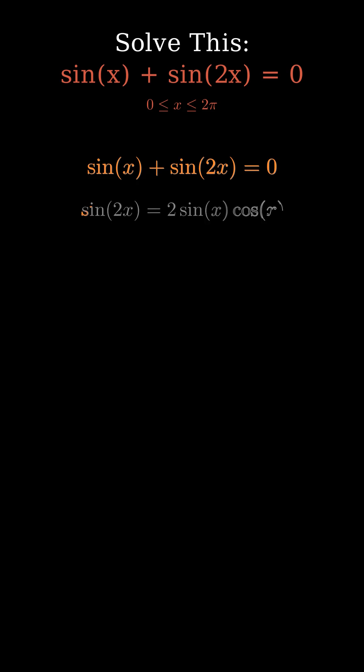To proceed, we'll use a trig identity. Sine of 2x equals 2 sine x times cosine x. This lets us write everything in terms of sine and cosine of x.